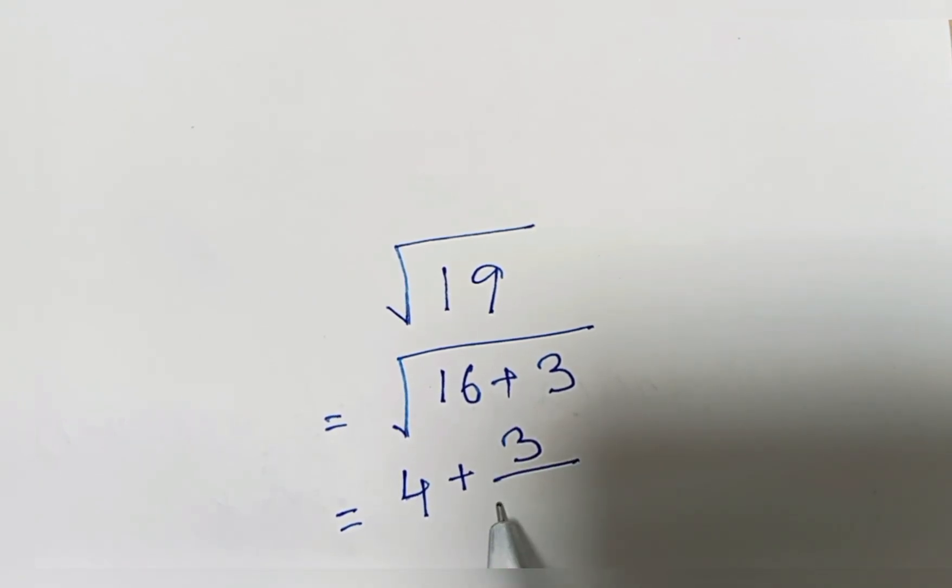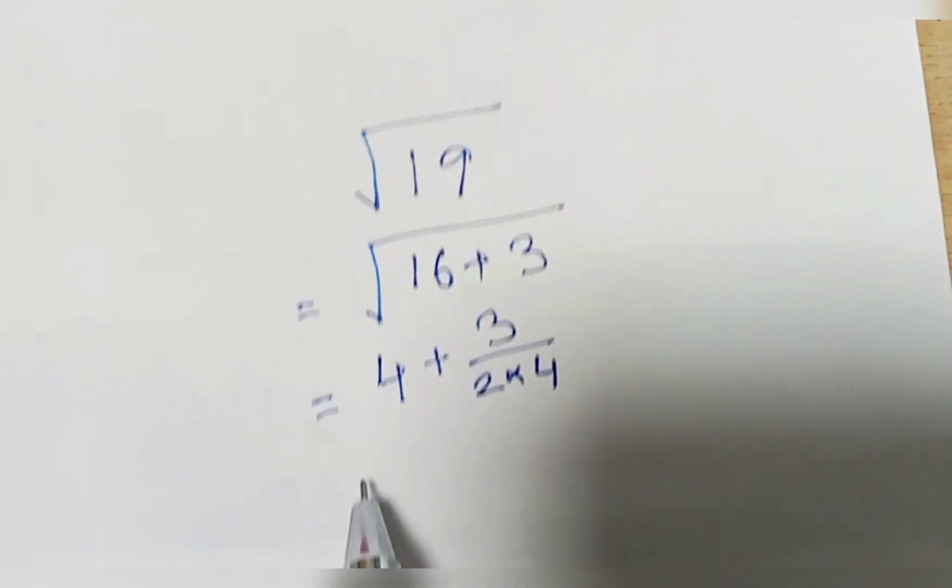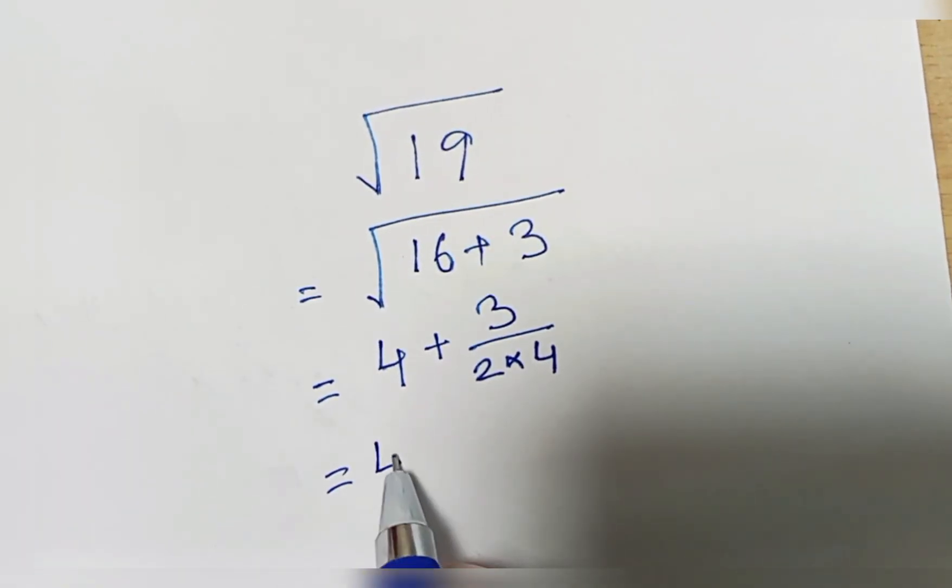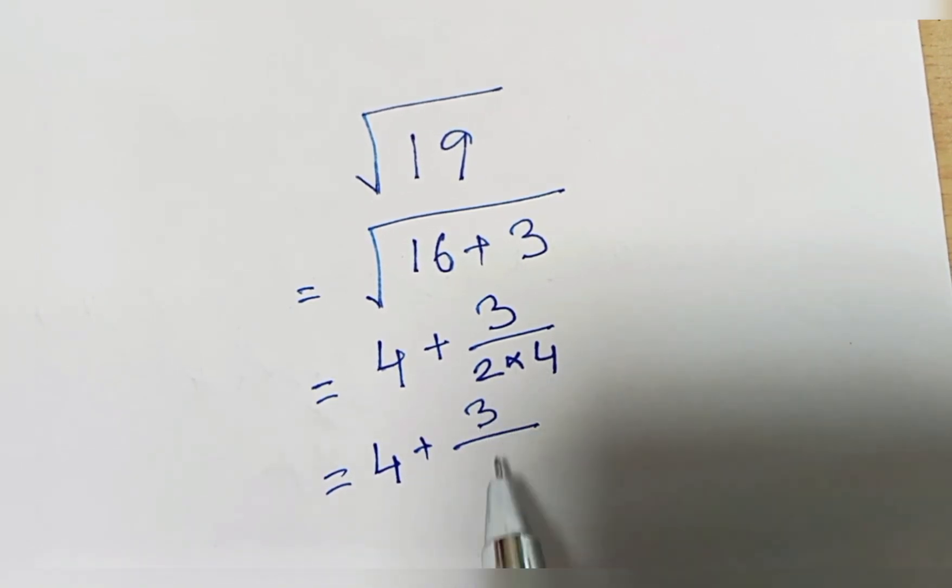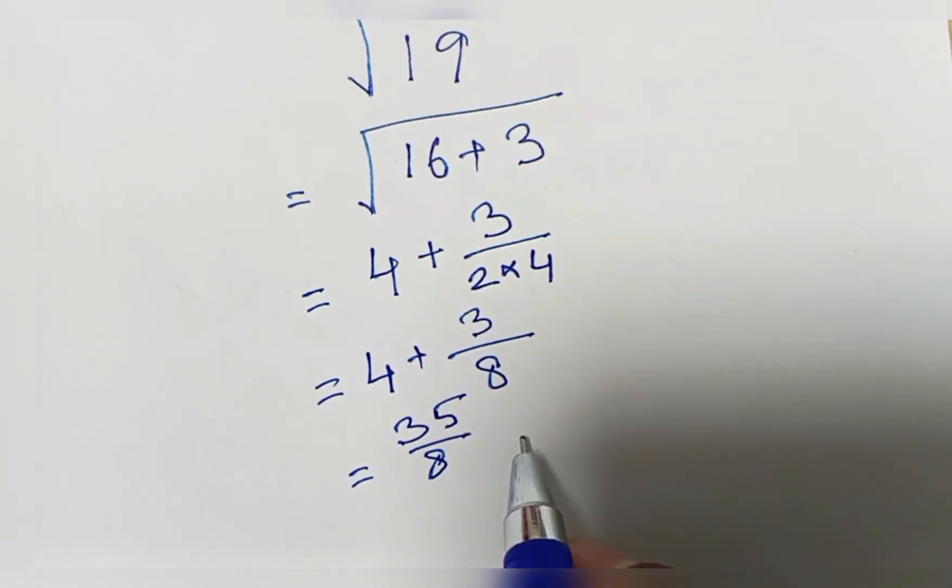This equals 4 plus 3 by 8, which equals 35 by 8. If you solve this, you will get the result, which is 4.37.